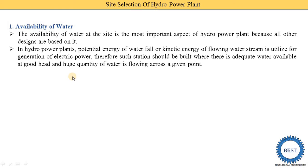In a hydropower plant, the potential and kinetic energy of water is used to produce mechanical energy in the turbine, and then this turbine shaft is connected with the generator. In the generator, mechanical energy is converted into electrical energy. Therefore, such a station should be built where abundant water is available at a good head and a huge quantity of water is flowing across a given point. We need to select such a site where water is available in good quantity and stored up to a good head.